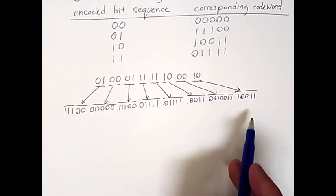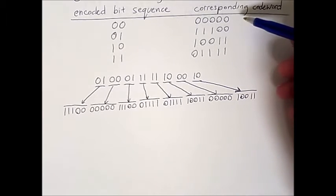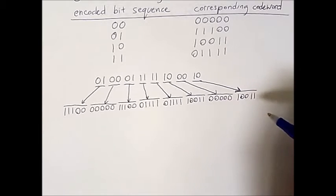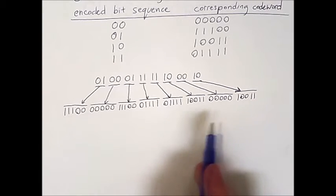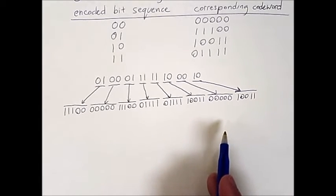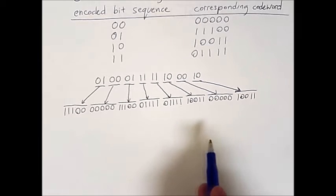Now this longer bit string is what will actually be transmitted. You can see that the length of the code words incurs a cost in terms of the number of bits that need to be sent. But by sending these extra bits we buy the ability to correct certain errors without needing to retransmit anything.